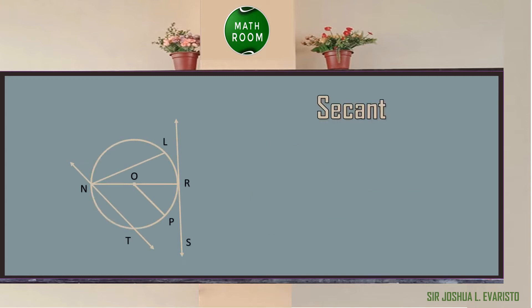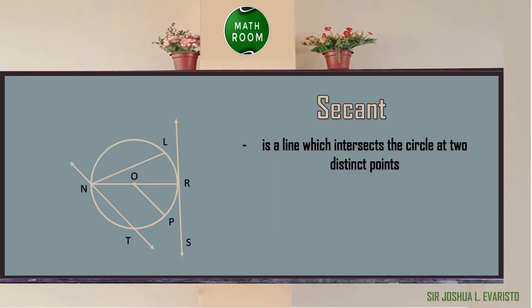The next part of the circle is what we call the secant line. It is a line which intersects the circle at two distinct points. On the given circle O, the secant line is line NT, wherein it touches point N and point T of the given circle O.